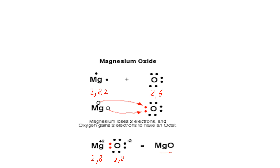Students, practice the formation of these ionic compounds. Watch the video carefully and try to understand how these electron dot structures are made. These electron dot structures are important and come in the examination, so please practice a lot. Do practice of some more compounds' formation. Thank you.